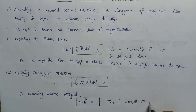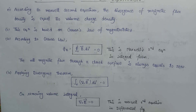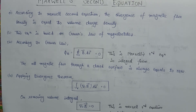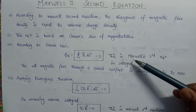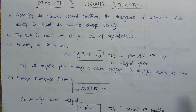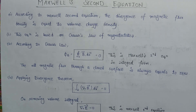This is Maxwell's second equation: del·B = 0. In this lecture we have derived Maxwell's second equation in both the integral as well as the differential form, and we noted that it is based on Gauss's law of magnetostatics. If you like my videos, please subscribe to my channel and hit the like button.